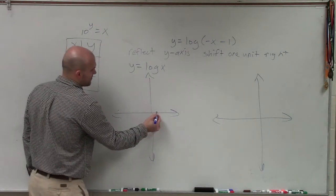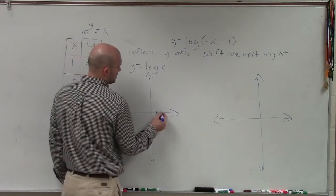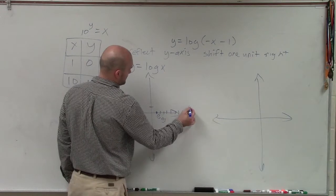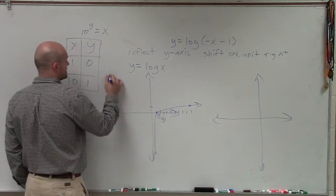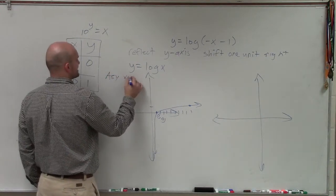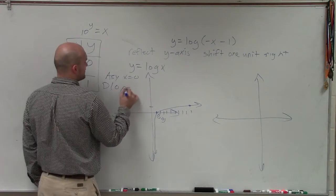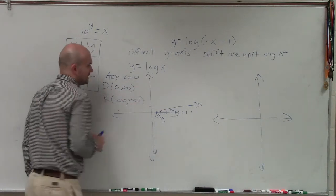So I can plot my two points at 1 comma 0 and then at 10 comma 1. So therefore my graph is going to look something like this. And I know that I have an asymptote at x equals 0, a domain that goes from 0 to infinity, and a range that goes from negative infinity to infinity.